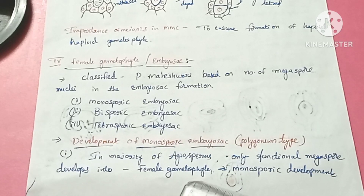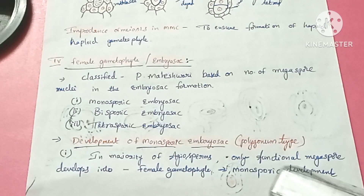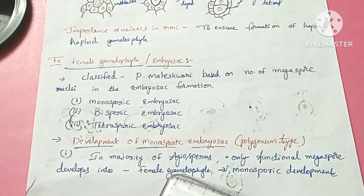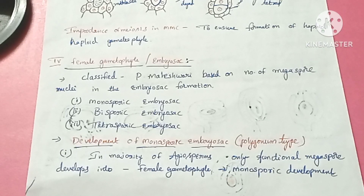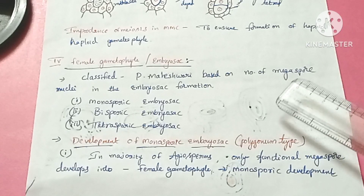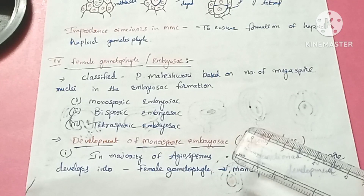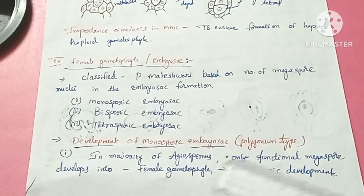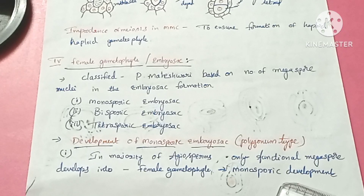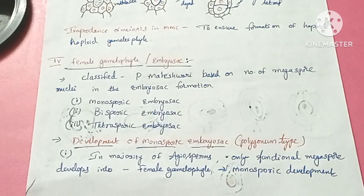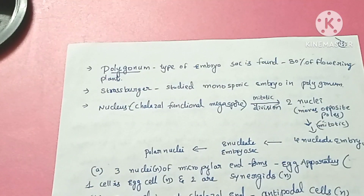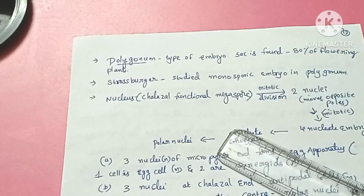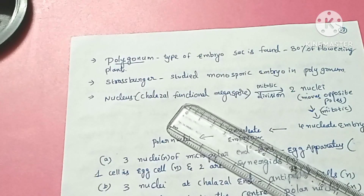Next is the development of the monosporic embryo sac, which is the Polygonum type. In most angiosperms, only one functional megaspore develops into the female gametophyte — this is called monosporic development. About 80% of plants have the Polygonum type of embryo sac.